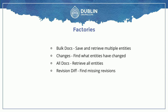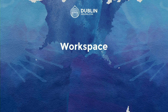We have a lot of factories that provide information during replication. The main ones: bulk_docs allows us to save and retrieve multiple entities; changes lets us see what has changed on a site between sequence A and sequence B across different sites; all_docs retrieves all entities regardless of entity type; and revision_diff allows us to find out exactly which revisions have changed. When we replicate content, we replicate the revisions, not the entity itself.